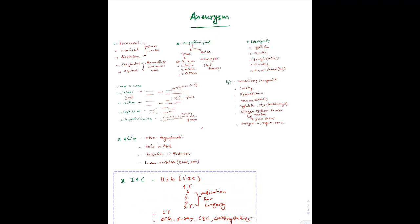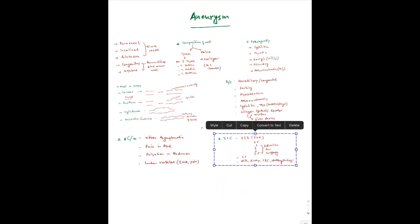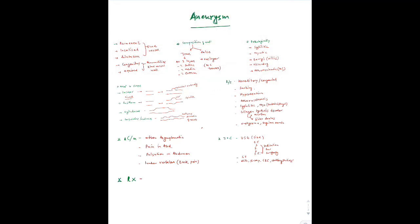Once the patient is diagnosed with aneurysm, the treatment depends on the size. For the aorta, the normal size is 3 cm. If the aneurysm measures 4.5 cm, we go for conservative treatment because the size is not yet alarming. The indication for surgery is 5 cm or more than 5.5 cm, so below that we go for conservative treatment.